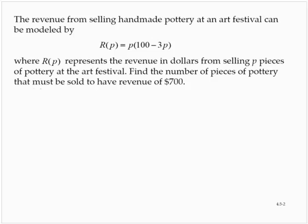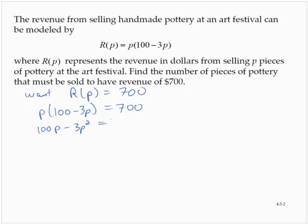We want the revenue, we want R(p) to be equal to 700. Well, R(p) is equal to p times 100 minus 3p, and we need that to be 700. Let me multiply this out. I'd have 100p minus 3p squared is equal to 700.